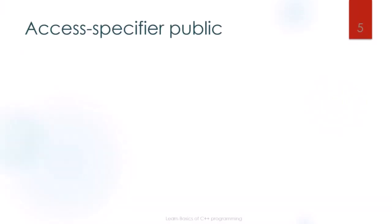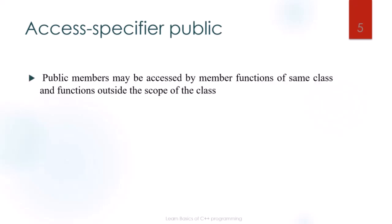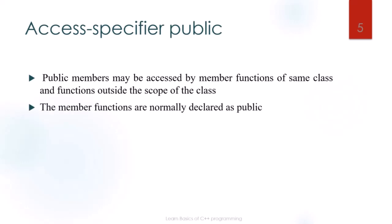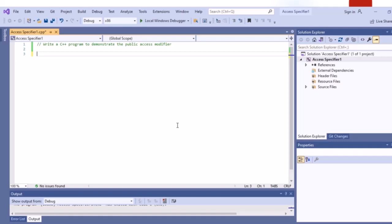The next access specifier is public. Public members may be accessed by member functions of the same class and functions outside the scope of the class, meaning public members are accessible from any part of the program. Member functions are normally declared as public; if we forget to declare the access specifier for member functions, they will be considered public by default.